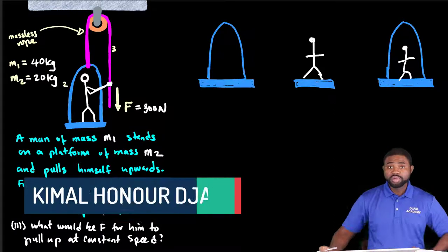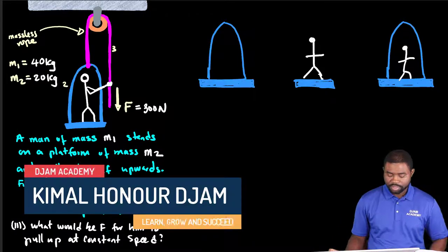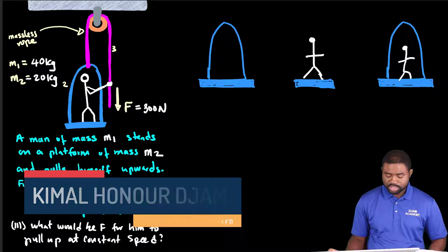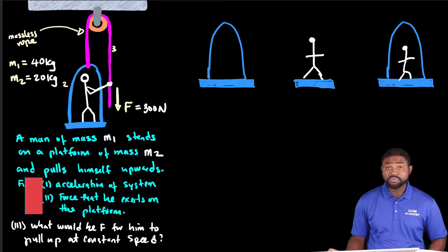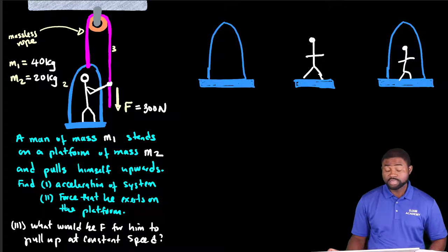Hello everyone and welcome to JAMA Academy. In this example, we have a man of mass M1 standing on a platform of mass M2. He pulls himself upwards using a rope over a massless and frictionless pulley.